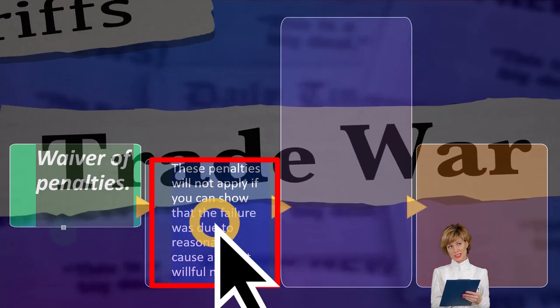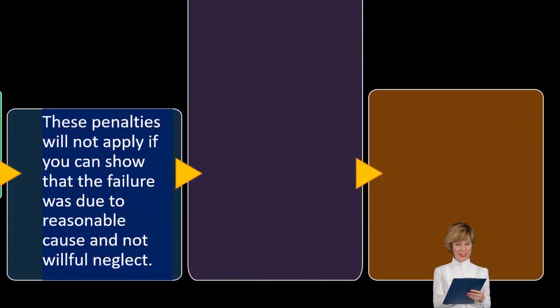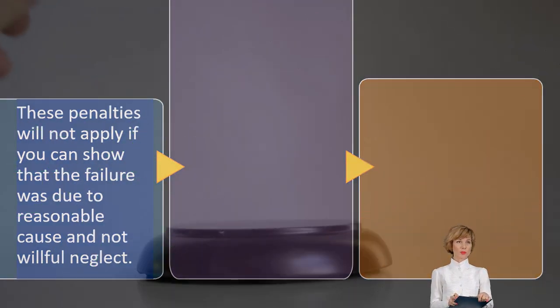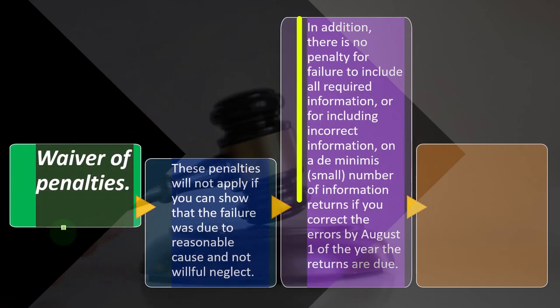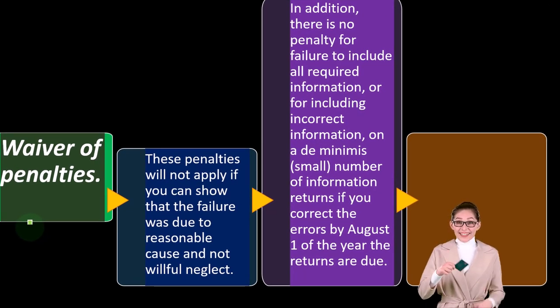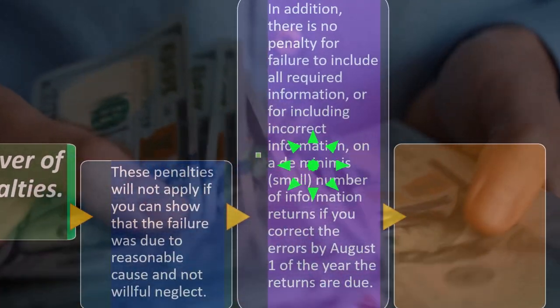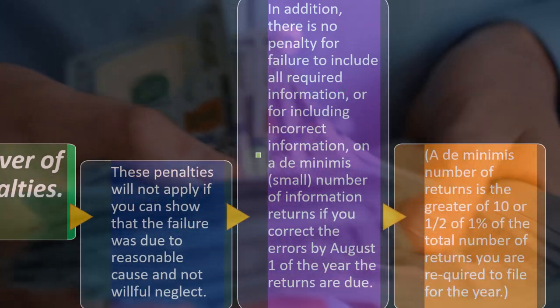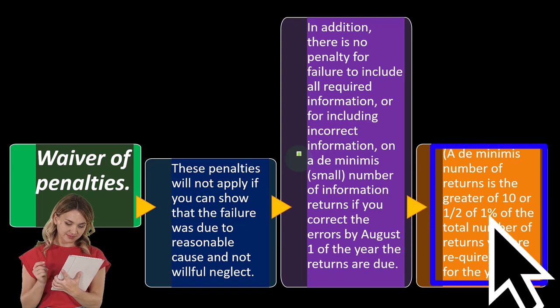There is also a waiver of penalties. These penalties will not apply if you can show that the failure was due to reasonable cause and not willful neglect. In law the question is often intent — if it was neglect, you'll have less of a penalty than if it was intentional. In addition, there is no penalty for failure to include all required information or for including incorrect information on a de minimis number of information returns, if you correct the error by August 1st of the year the returns are due. A de minimis number of returns is the greater of 10 or one-half of 1% of the total number of returns you are required to file for the year.